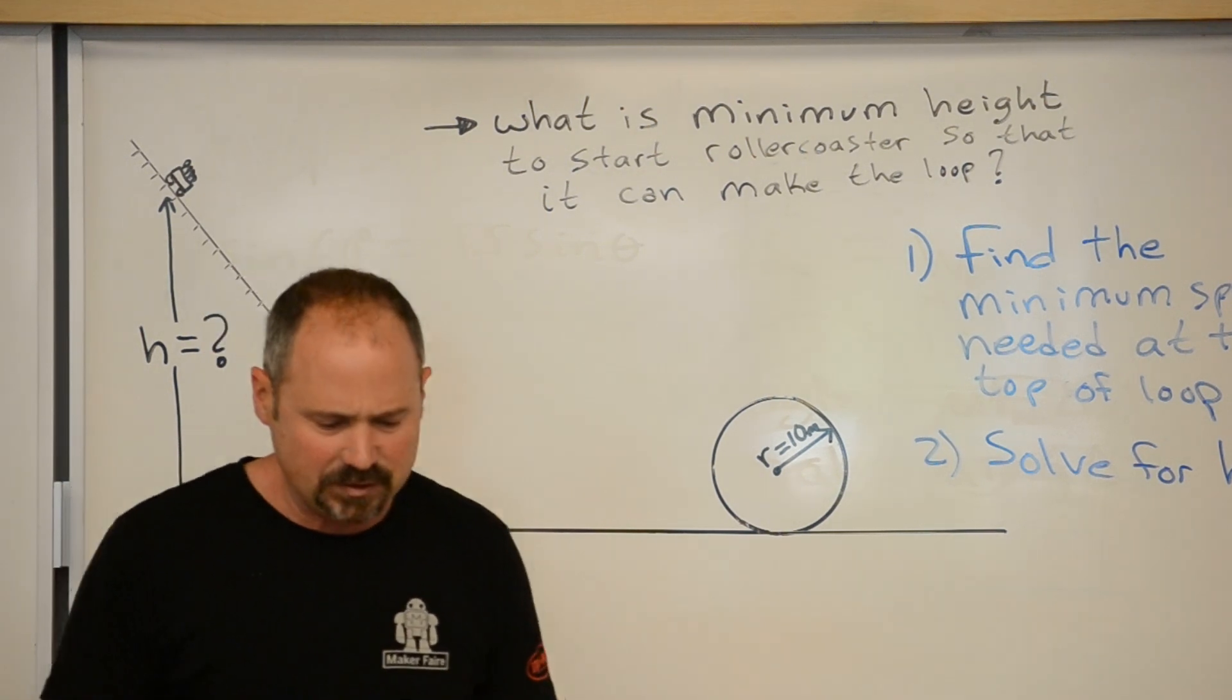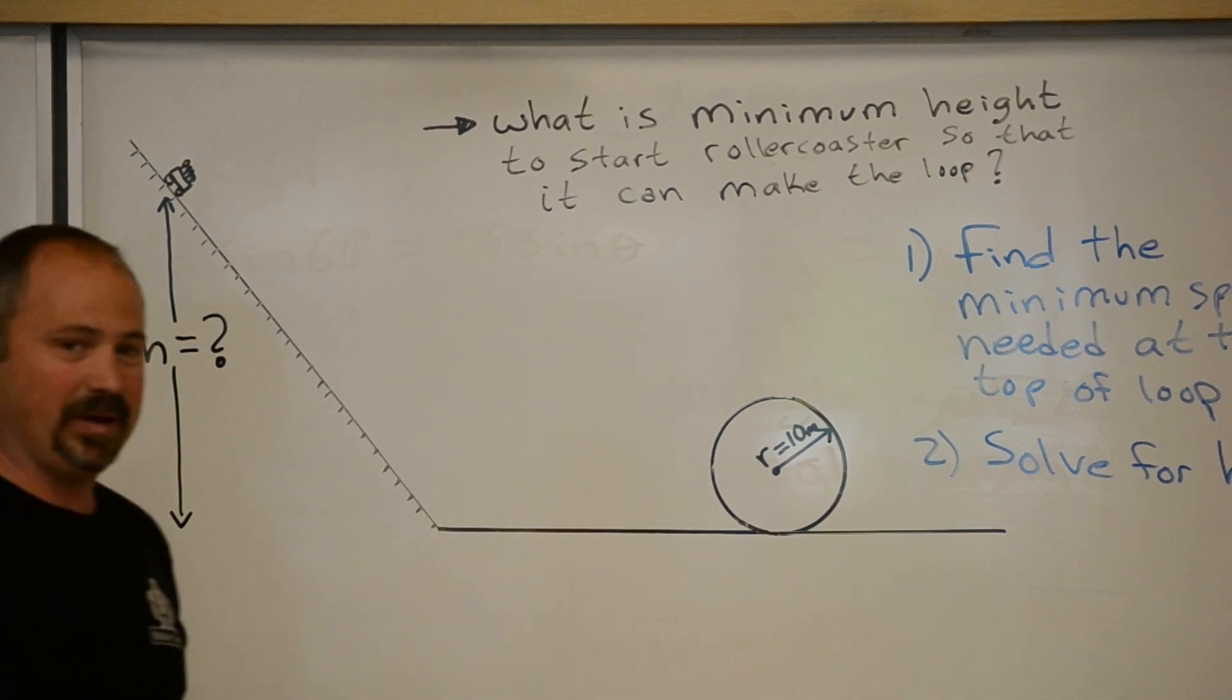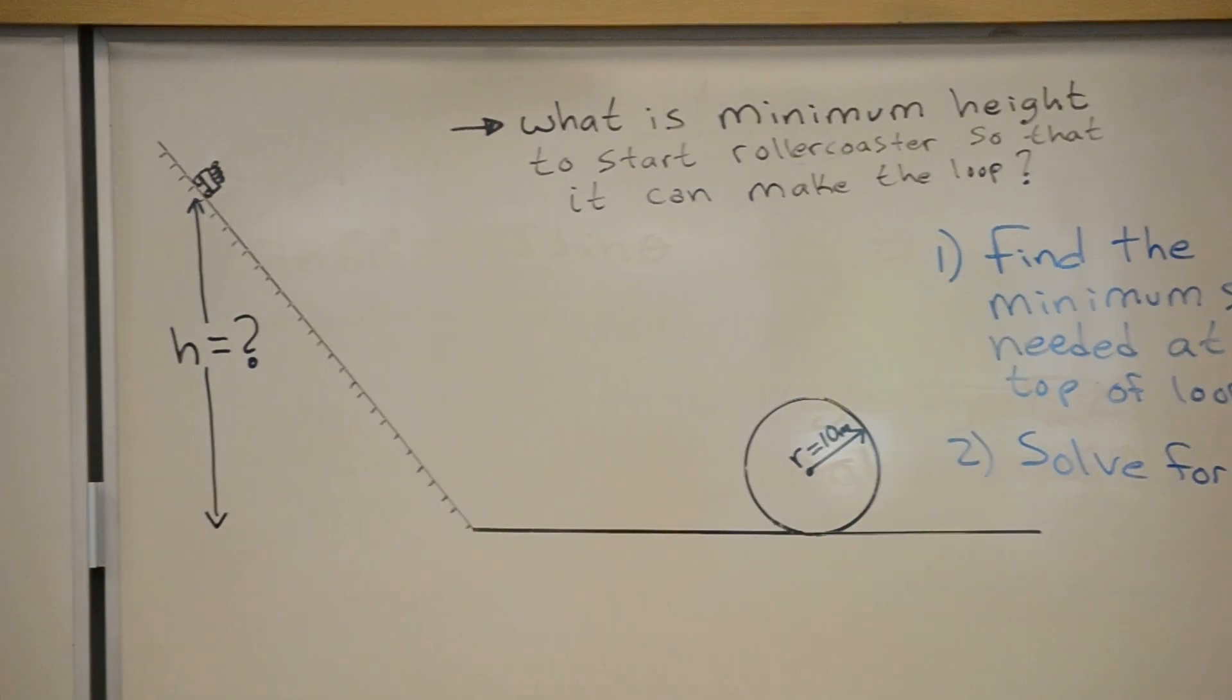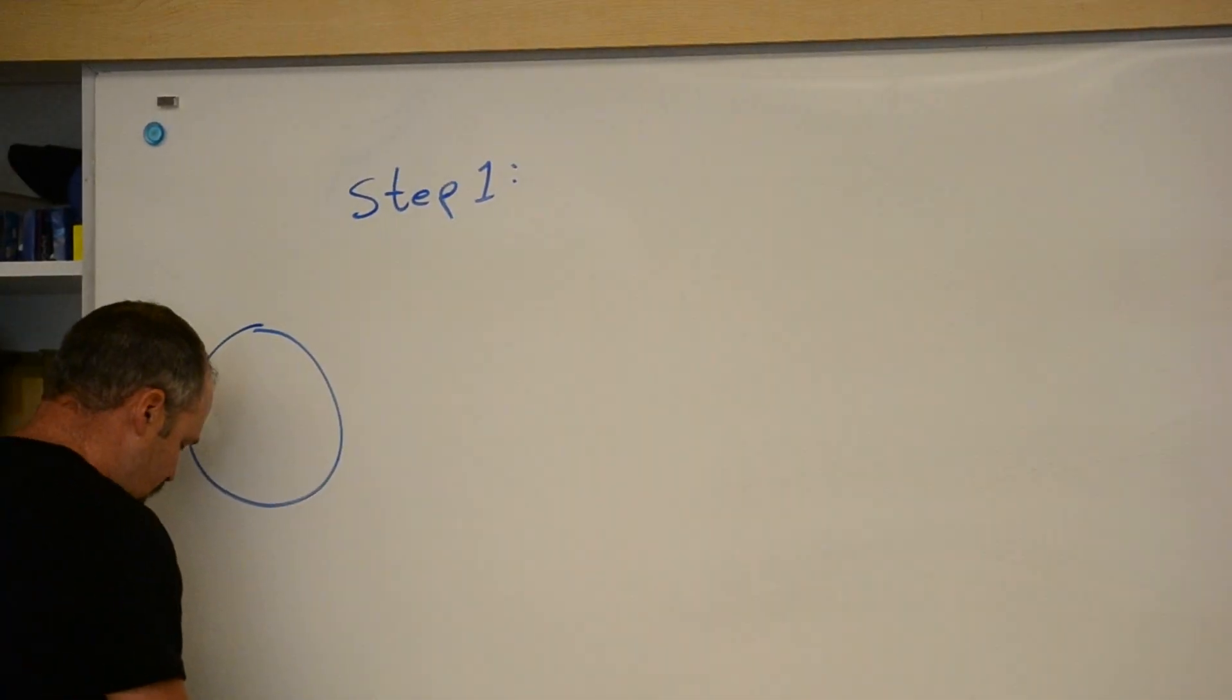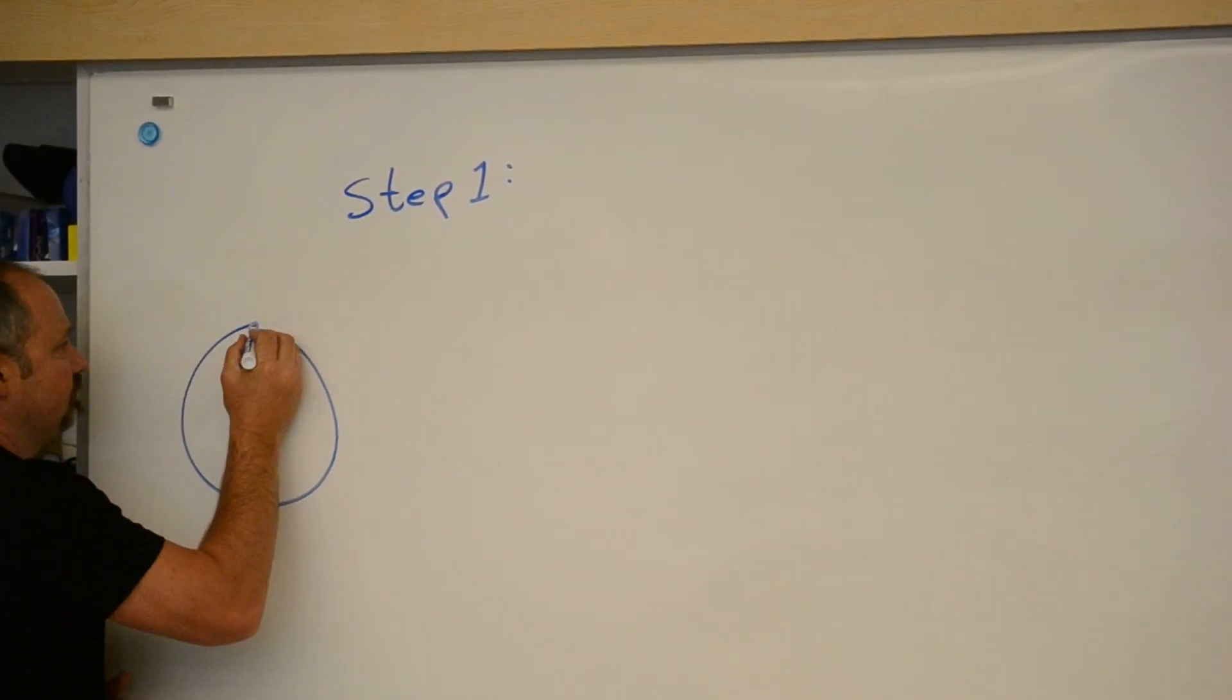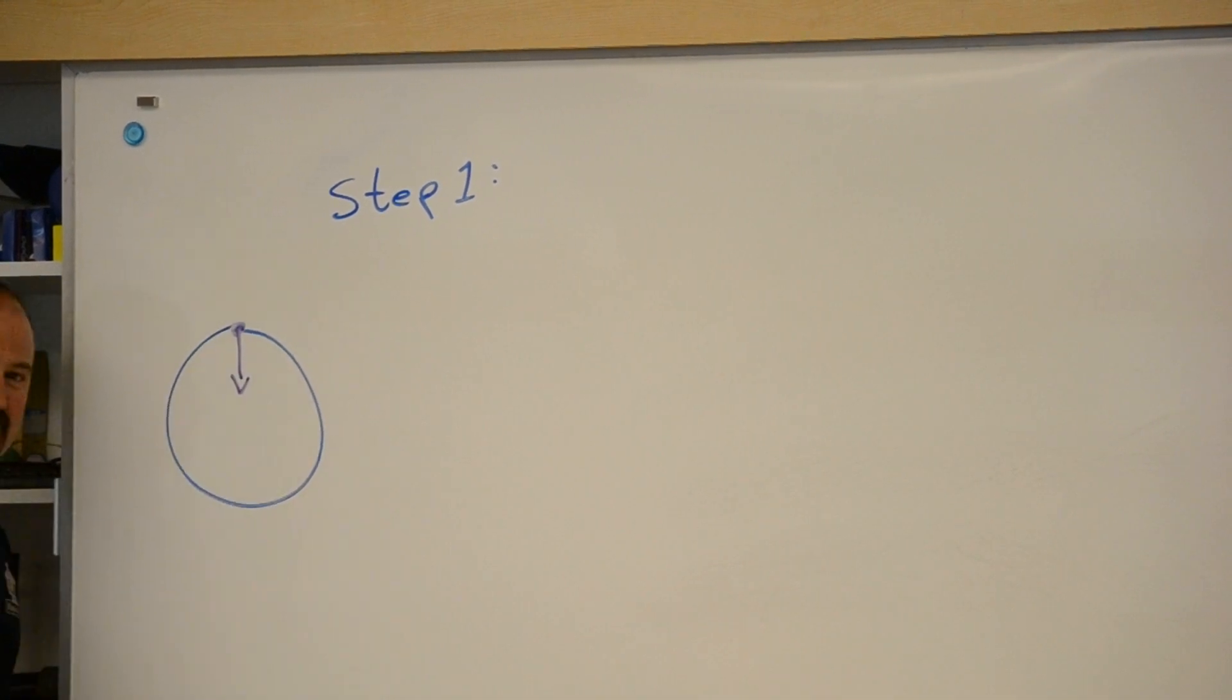Starting with step one. What is that condition to make the loop? At the top of the loop, if I draw a free-body diagram, I've got the force of gravity going down. And since you're going in a circle, the force of gravity is the centripetal force in this case.